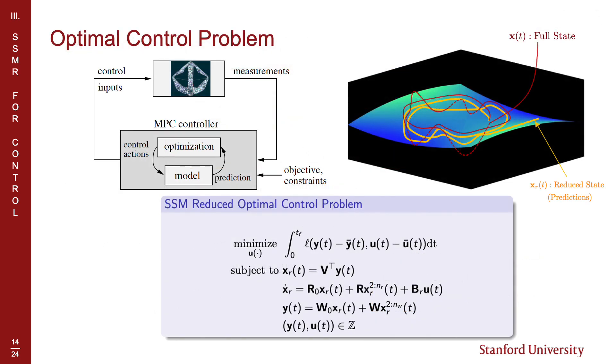We now approximate the original high-dimensional OCP using the manifold mappings and the reduced dynamics. Since the dimension of the reduced dynamics is drastically less than the original dynamics, the approximated OCP is now computationally tractable. Furthermore, we use sequential convex programming to solve the nonlinear program in a receding horizon fashion.